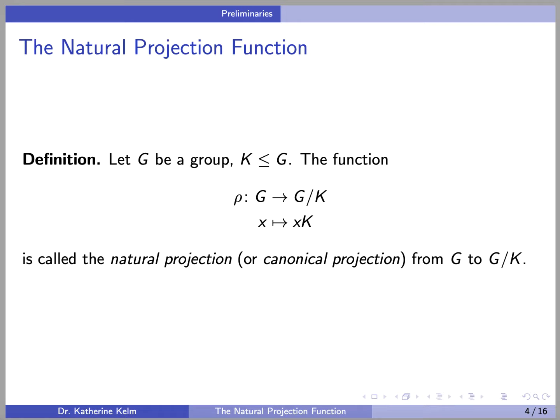First, let's define the natural projection function. Let G be a group and let K be a subgroup of G. The function rho from G to the set of left cosets G mod K, given by X getting sent to XK for each X in G, is called the natural projection, or sometimes the canonical projection from G to G mod K.